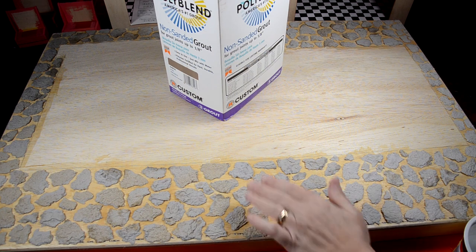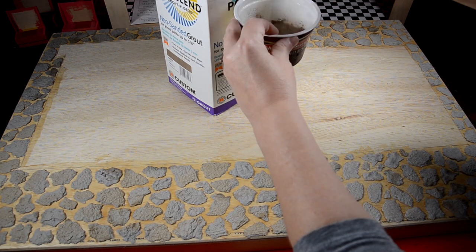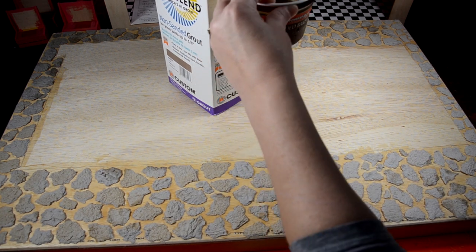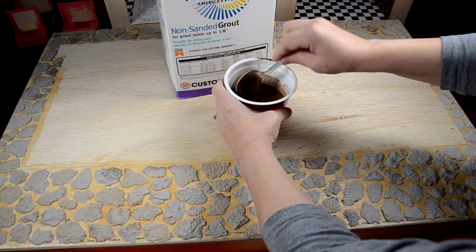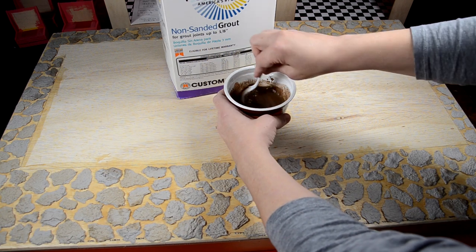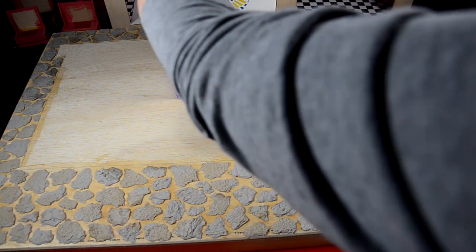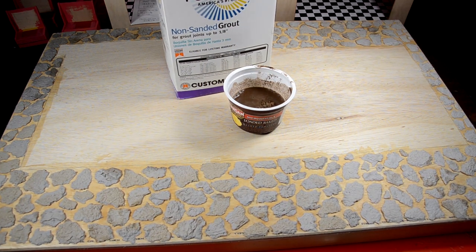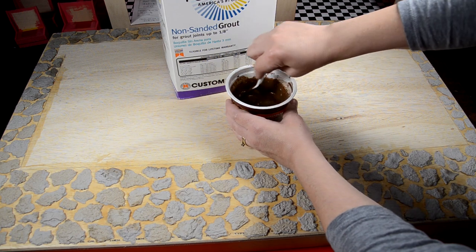Okay guys, so now to give it the texture that we need it to have, I'm going to take some non-sanded grout and I'm going to mix it up in some water. Just like that. Now, you just want to keep stirring it until you get it to mix together fairly good. Once you get that done, then you can add some more. Mix that again.